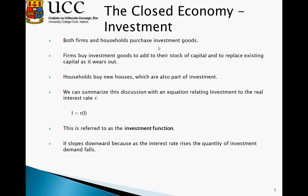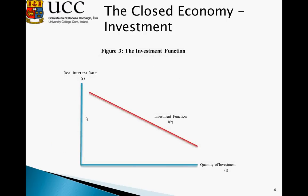In terms of investment, both firms and households purchase investment goods. Firms buy investment goods to add to their stock of capital and also to replace capital as it wears out, whereas households buy new houses, which are also part of investment. We summarise the relationship between investment and its demand using the interest rate, saying investment is a function of R — the interest rate — referred to as the investment function. It slopes downward because as the interest rate rises, the quantity of investment demanded falls. Looking at the investment function, it is like a demand curve where the real interest rate is the price of money, and as price increases, quantity of investment falls, and vice versa.